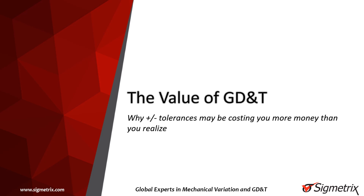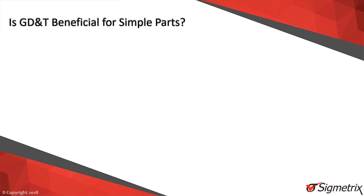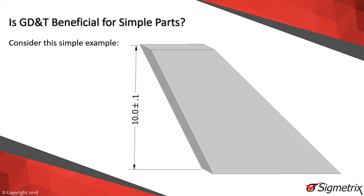In this short video, we'll explore how using just plus-minus tolerancing can lead to problems in manufacturing. Let's examine what can happen on this simple part — specifically, we'll look at the height as controlled by the 10 plus-minus 0.1 millimeter dimension depicted here.